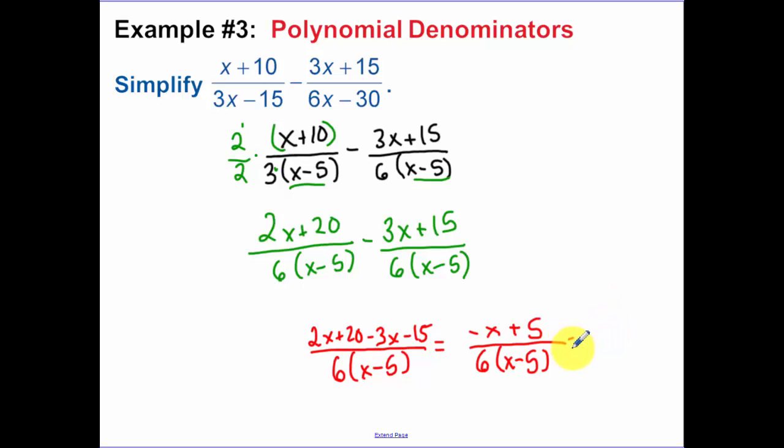Now we simplify out the numerator. 2x minus 3x is a negative x plus 5. Now something that's kind of interesting here. Notice how this x minus 5, and I have negative x plus 5. If I factor out a negative from the top, now those can cancel. Remember they cancel to be 1 and 1, so I'm left with my answer being a negative 1 sixth. Keep in mind, this is a rare occurrence, where things are going to cancel once you factor. So keep in mind, you're not going to be doing this whole factoring thing a lot.